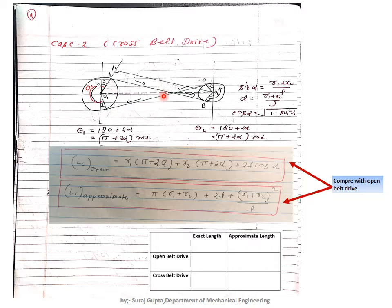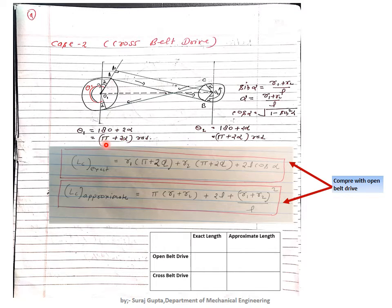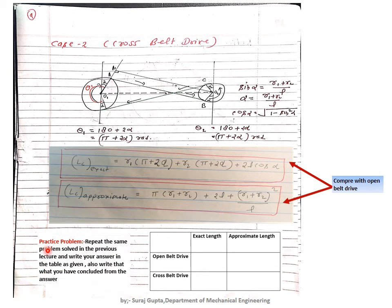We can see from the diagram that the length must be greater in cross belt drive because the belt goes crossly. Also, the contact angle at both the driver and driven pulleys is high — theta₁ is 180° + 2α (i.e., π + 2α radians) and theta₂ is also 180° + 2α (i.e., π + 2α radians).